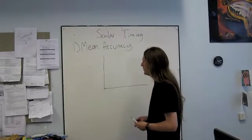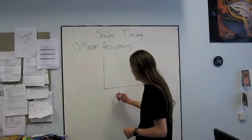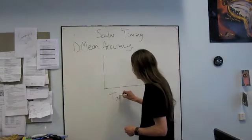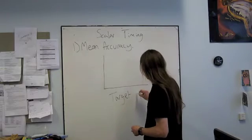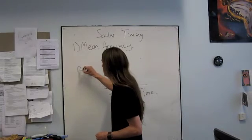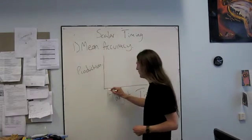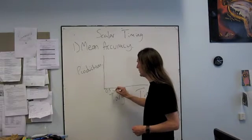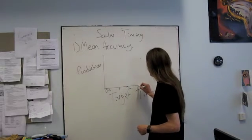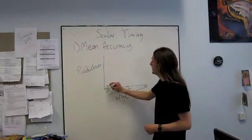When you plot the data on the graph, here is what they were asked to produce, their target time. On the y-axis you plot what they actually produced, their actual production.